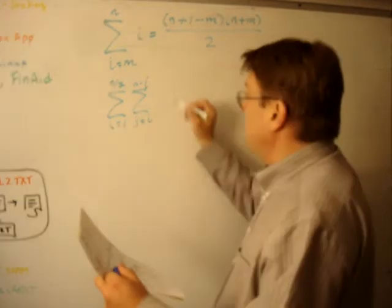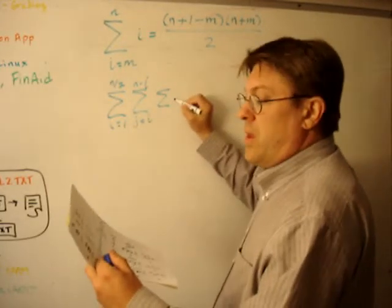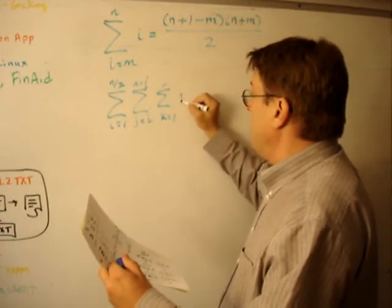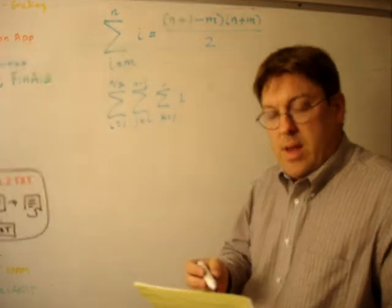And then you sum from k equals 1 to j of 1, one computer operation.